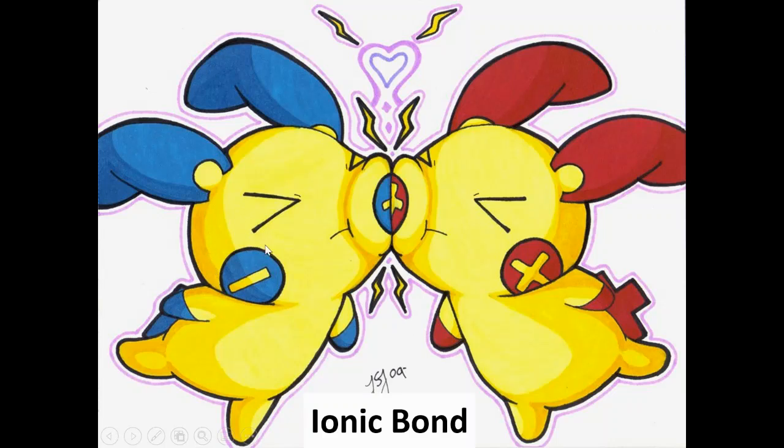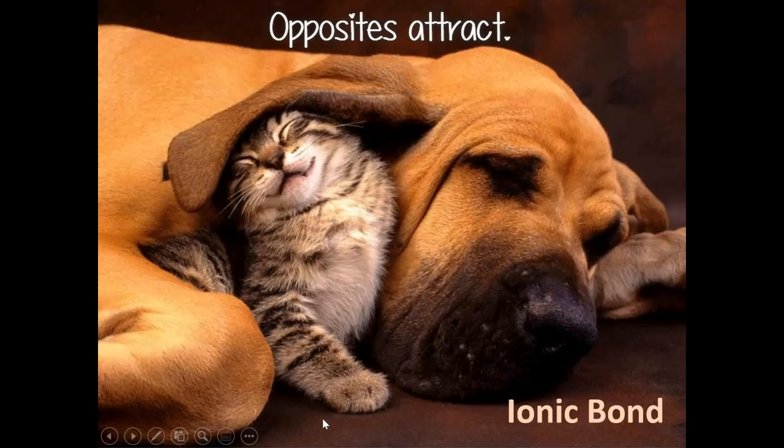Here we have the negative, which is an anion, and a positive, which is a cation. Here we go again. Opposites attract. That would be an ionic bond.